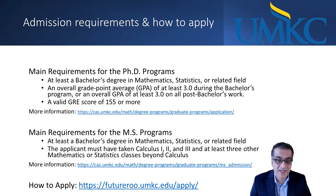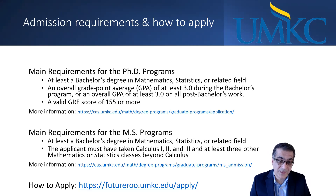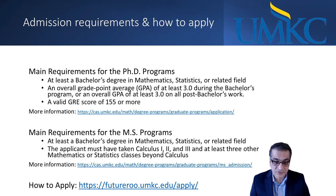The next slide is about admission requirements. For a PhD, students need at least a bachelor's degree in mathematics, statistics, or related fields. An average GPA of 3.0 is needed and a GRE score of 155 or more is required for PhD programs. For master's programs, a bachelor's degree is needed, and the student should have passed the calculus series and at least three courses beyond that. There is no GRE requirement for master's degree applicants. You can go to the provided link to apply for a graduate program.